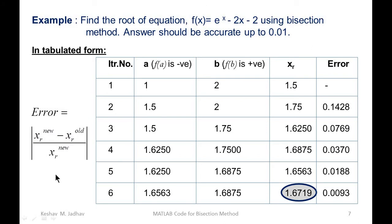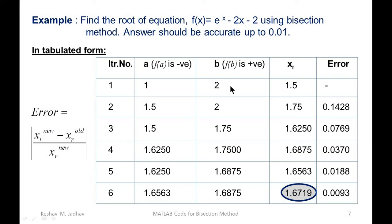After each iteration we can calculate the relative error. After the third iteration, xr_new is 1.6250 and xr_old is 1.75. As we perform more iterations, the error keeps reducing. After the sixth iteration the error is 0.0093, which is less than 0.01, so we stop. We must repeat iterations until the relative error is less than the given accuracy. Now we need to implement this in MATLAB code.